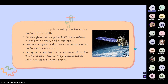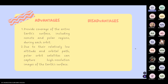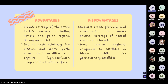The advantages of polar orbit satellites: they provide coverage of the entire Earth's surface, including remote and polar regions, during each orbit. Due to their relatively low altitude and orbital path, polar orbit satellites can capture high-resolution images of the Earth's surface. The disadvantages are: they require precise planning and coordination to ensure optimal coverage of desired regions and targets. Second, they have a smaller payload compared to satellites in higher orbit, like geostationary satellites.